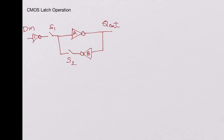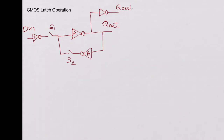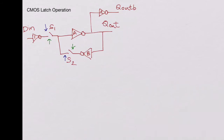We have inverter 1, and then another inverter 2 to generate Q out bar, which is the opposite of Q out. This is how a latch is built. We consider two cases: when switch S1 is open and S2 is closed, and when S1 is closed and S2 is open. S1 is controlled by the enable signal.